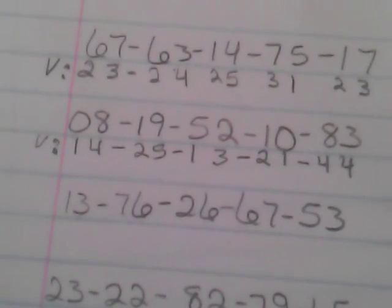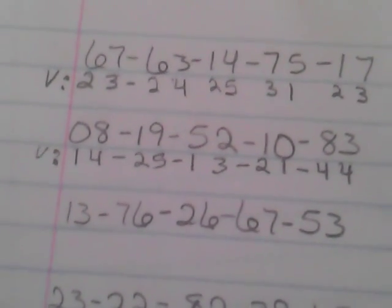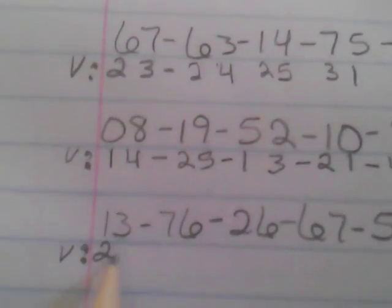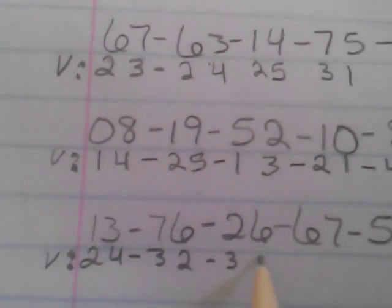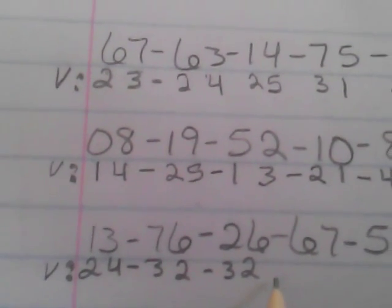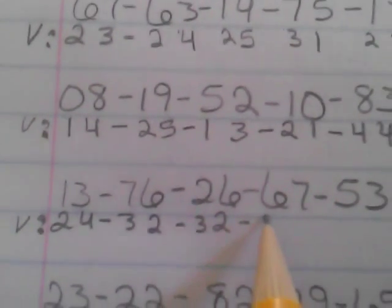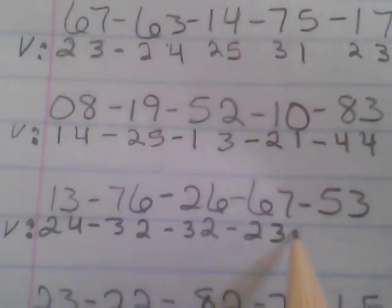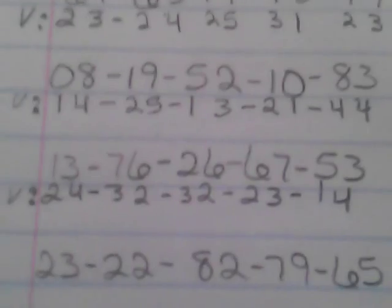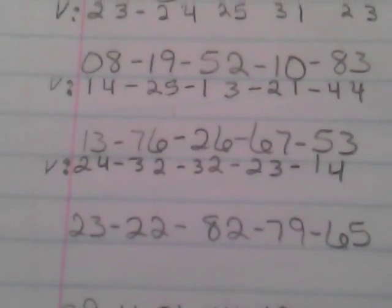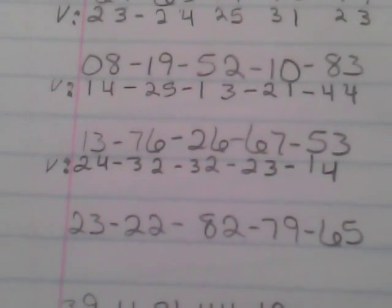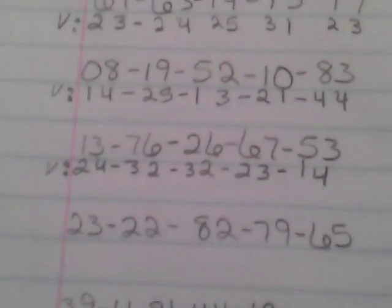V track. To V track this combination: 14, 25, 13, 21, 44. Let's do the next one. We V track it, we put the V there so we know it's V tracked. It'll be 24, 32, 32, 23, 14. Notice how you had two V track numbers in this one lottery drawing: you had 24, 32, 32, 23, and 14.